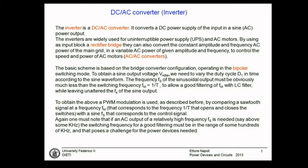The basic scheme that we studied is based on the bridge converter that works in the bipolar switching mode. By varying the duty cycle, we can get an output voltage that ranges from the DC bus voltage to minus the DC bus voltage. This means that if we vary the duty cycle with a sinusoidal shape, we can get a sinusoidal output.